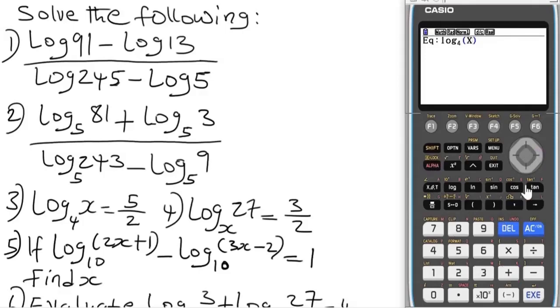We have log base 4 of x equals 5 over 2. Press option then math, press F4 for log. The base is base 4, then put x. Report it to be equals shift for the fraction, 5 over 2. Press equals. Assign x a value, I recommend zero. Press equals again and the answer is 32.